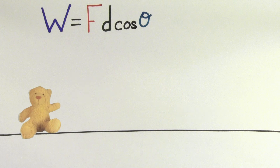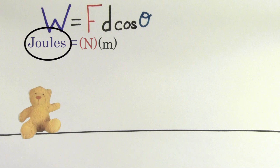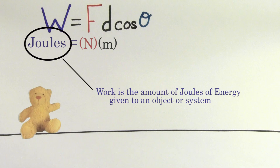We notice a few things about this formula. The units for work are newtons times meters, which we call joules. Joules are the same unit that we measure energy in, which makes sense because work is telling you the amount of joules given to or taken away from an object or a system.